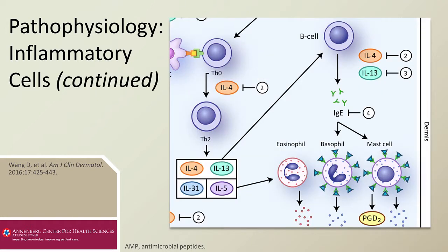Production and release of IL-4, IL-13, IL-31, and IL-5 results in further immune activation. IL-5 directly activates eosinophils, causing degranulation and release of eosinophil granules.